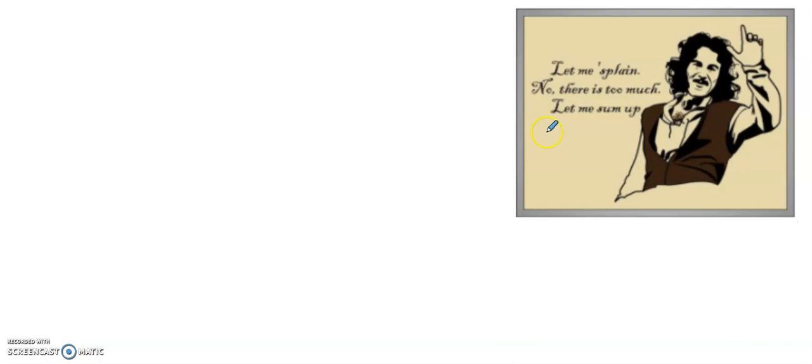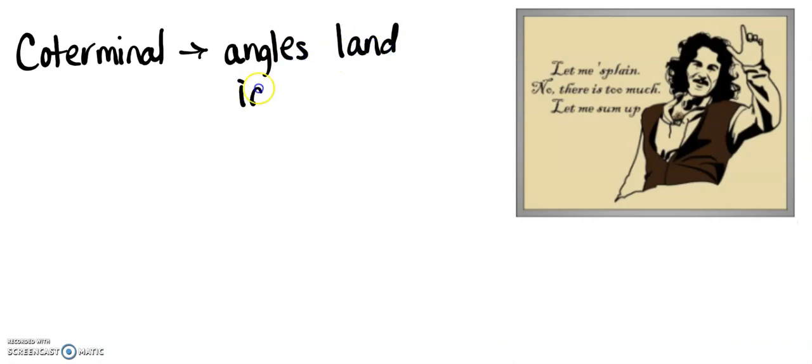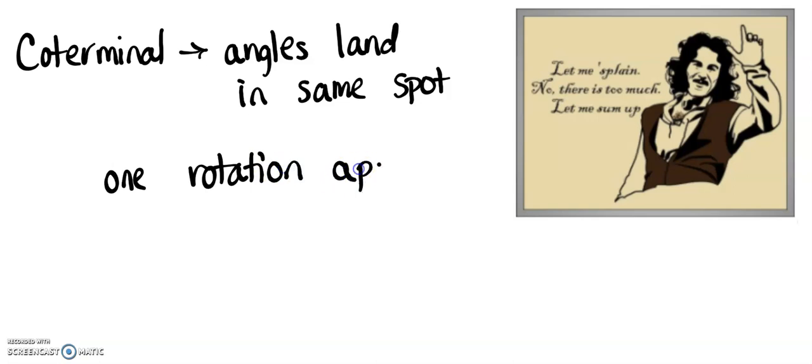All right? So, this is a little Princess Bride reference. I don't have much time, so I'd like to say, let me explain. No, there is too much. Let me sum up. So, coterminal angles land in the same spot. They are one rotation apart. And you add or subtract 360 if you're in degrees, or you add or subtract 2 pi if you're in radians, to find those angles that land in those same spots. All right, folks. Thank you so much for listening, and have fun storming the castle. Bye.